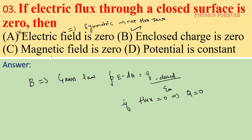Option C states the magnetic field is zero — but electric flux does not inform us about the magnetic field. Option D states the potential is constant — that is not necessary; the potential can still vary with zero flux. So option B is correct: the enclosed charge is zero.